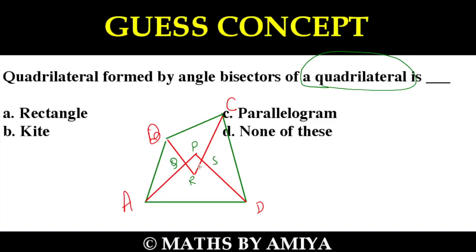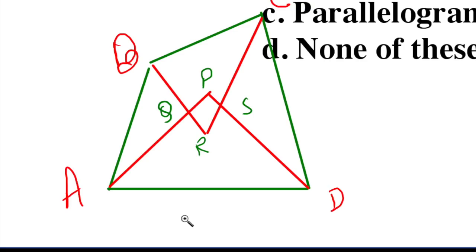So this quadrilateral is known as the angle bisector quadrilateral. Let's zoom the figure. Okay. So we have this figure. In this we need to find what is the PQRS.